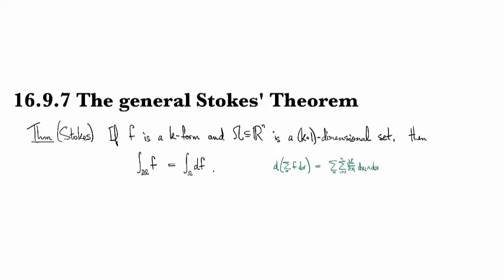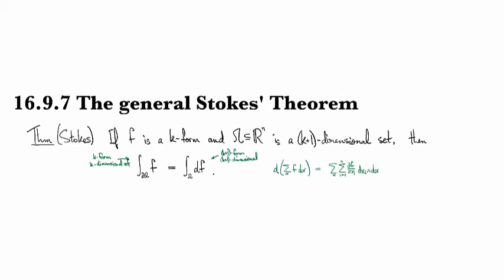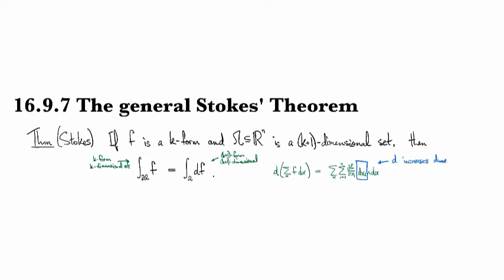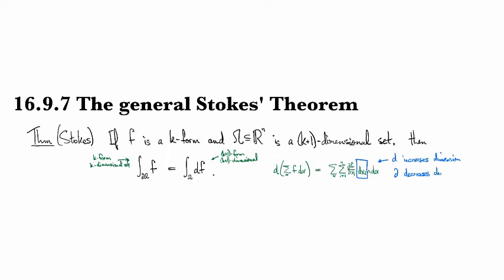On the left side we have a K-form on a K-dimensional set; on the right side we have a K+1 form on a K+1 dimensional set. This is a deep theorem about what happens when you move between dimensions. We saw that D increases dimension — you go one level up by the addition of the DX when you apply D. However, the boundary operator goes the opposite direction: it decreases dimension.